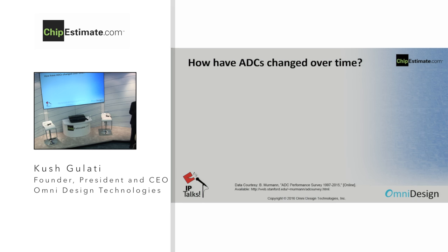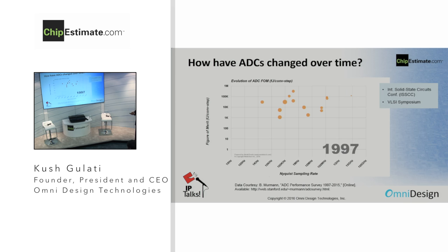Now we're going to do a little bit of a detour, where we're going to explore how analog-to-digital converters have changed over time — essentially look at some historical trends in ADC converters. To answer this question, we're going to start our journey in 1997. We have collected data points from the foremost journals, conferences, and publications — performance metrics from data converters published in the year 1997. Each of these orange bubbles represents a specific ADC that was published in 1997, from some of the very cutting-edge ADC design and research.